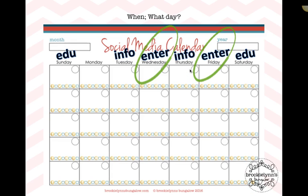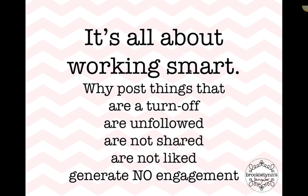That's what I did, so your calendar should look like this. Write education above Sunday and Saturday, info for information on Tuesday and Thursday, and enter for entertainment above Wednesday and Friday. Now you have a good template of what to post and when to post it, so that you are working smart, not hard. It's all about working smart.